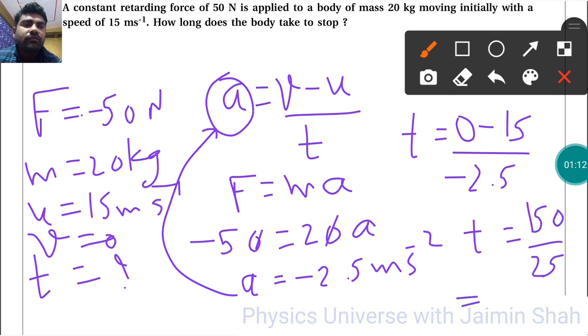So T is equal to 150 upon 25. So here negative negative cancel out become positive.